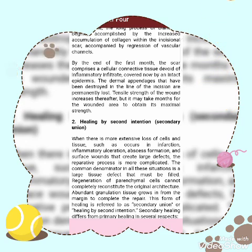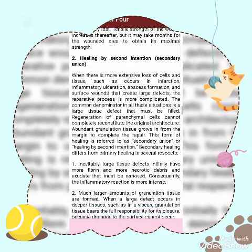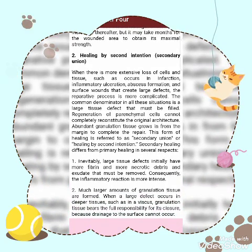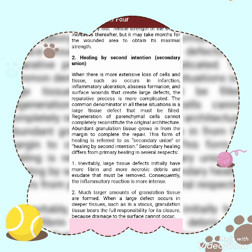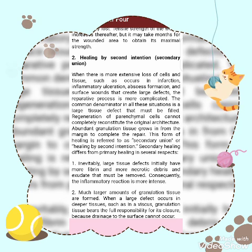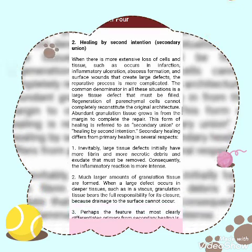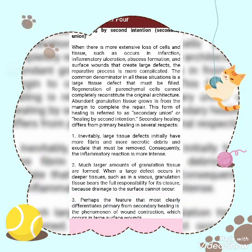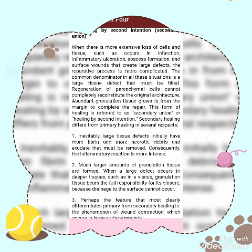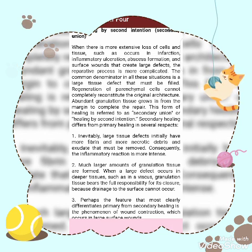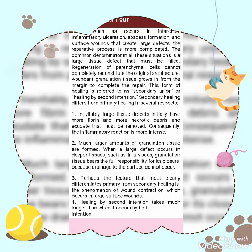Healing by second intention or secondary union: when there is more extensive loss of cells and tissue — such as occurs in an infarction, inflammatory ulceration, abscess formation, and large surface wounds — the regenerative process is more complicated. The common denominator in all these situations is a large tissue defect that must be filled. Regeneration of parenchymal cells cannot completely reconstitute the original architecture, so granulation tissue grows in from the margins to complete the repair. This form of healing is referred to as secondary union or healing by second intention.